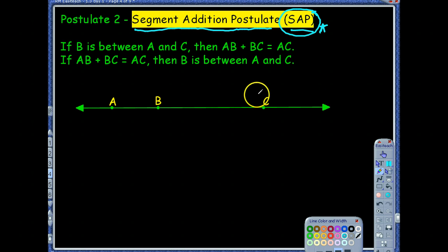It sounds exactly what it is. You're basically adding segment lengths together. So, it says if point B, again, capital B is talking about a point, is between A and C. So, they're saying point B is somewhere between points A and C.